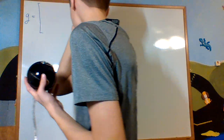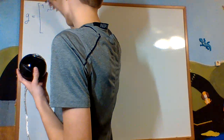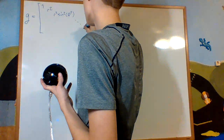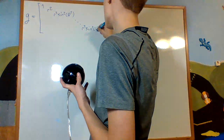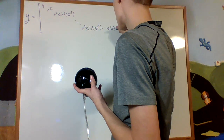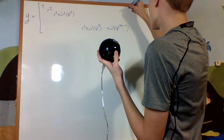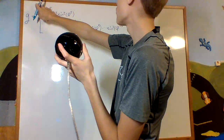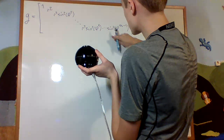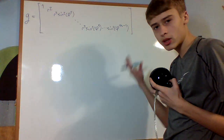We're going to have a big diagonal matrix with entries 1, R squared, R squared sine squared of phi_1, all the way down until R squared sine squared phi_1 up until sine squared of phi_{n-1}. We go from 1, 2, 3, all the way up until n+1, because this is an n+1 dimensional manifold.